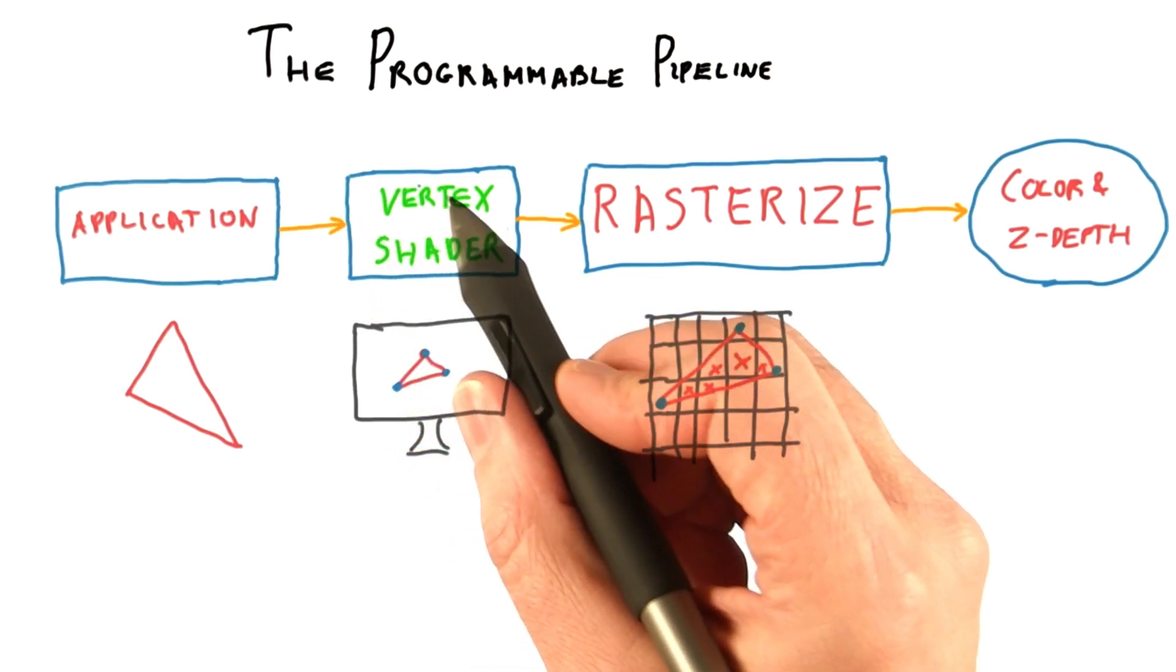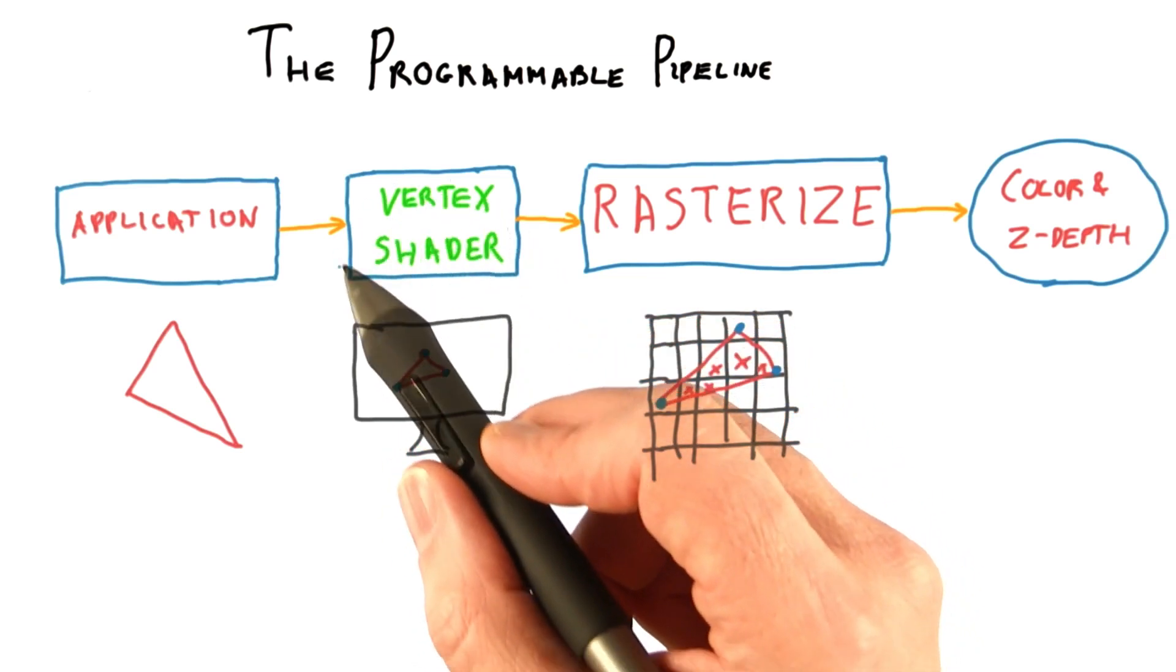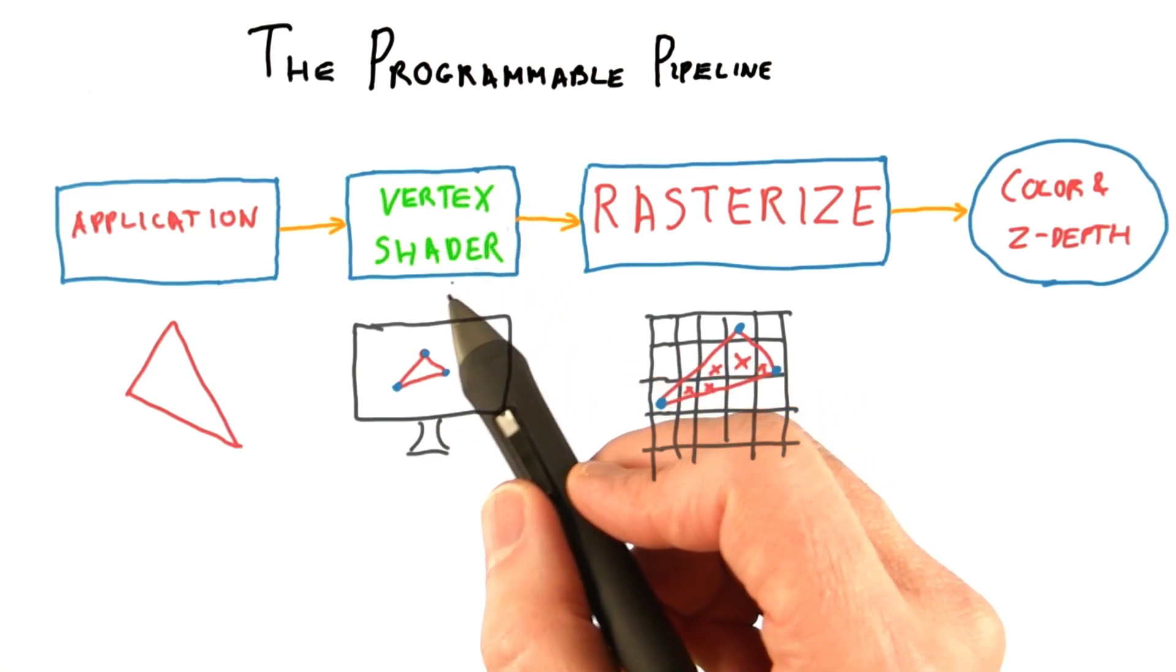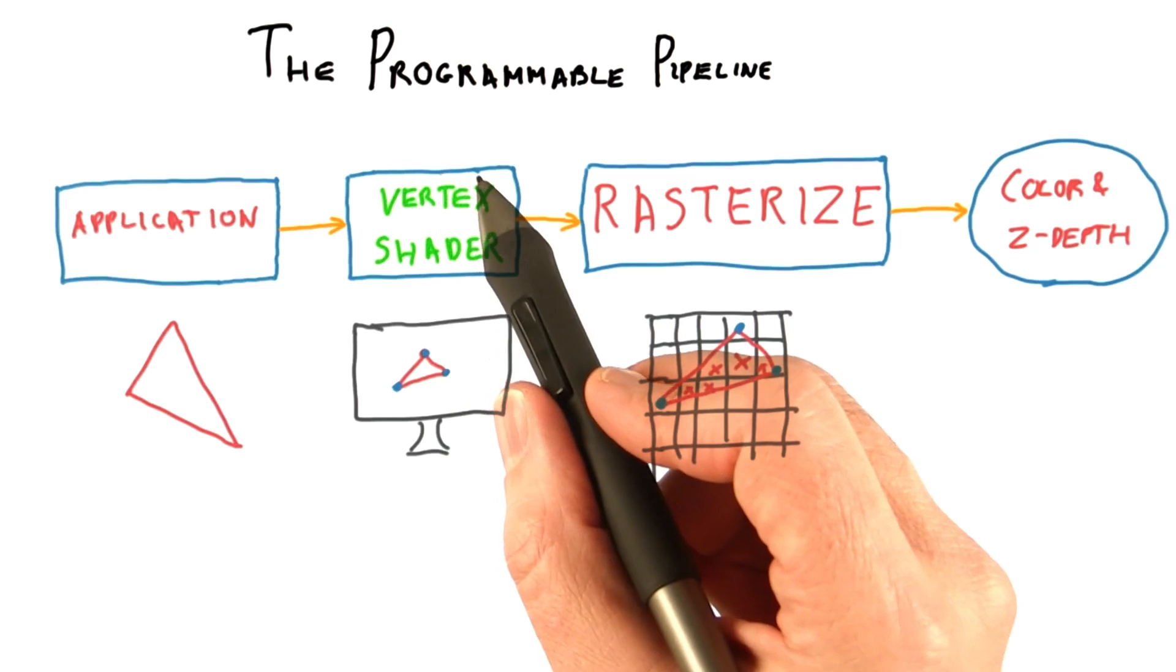Modern GPUs have parts of the pipeline that are programmable. The transform to screen part of the pipeline is done by what is called a vertex shader. This programmable element, essentially a little computer, processes each vertex of the triangle.